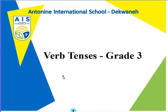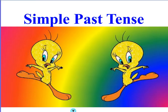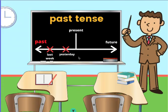Hello, Grade 3. Our lesson today is about verb tenses. The tense that we are going to learn about is the simple past tense. The simple past tense shows an action that happened in the past and it is over.